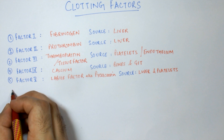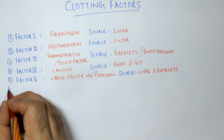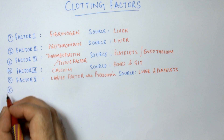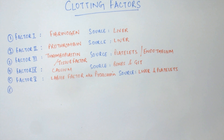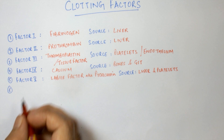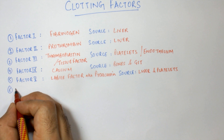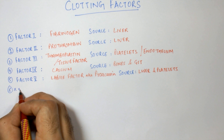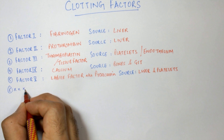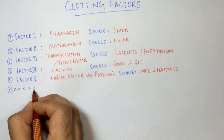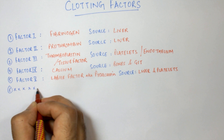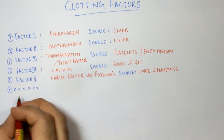An important thing to remember: factor number six is not present in the coagulation factors. Earlier, factor five-a — that is, activated factor five — was known as factor number six. Now it is designated as factor 5a, so factor number six is unassigned.